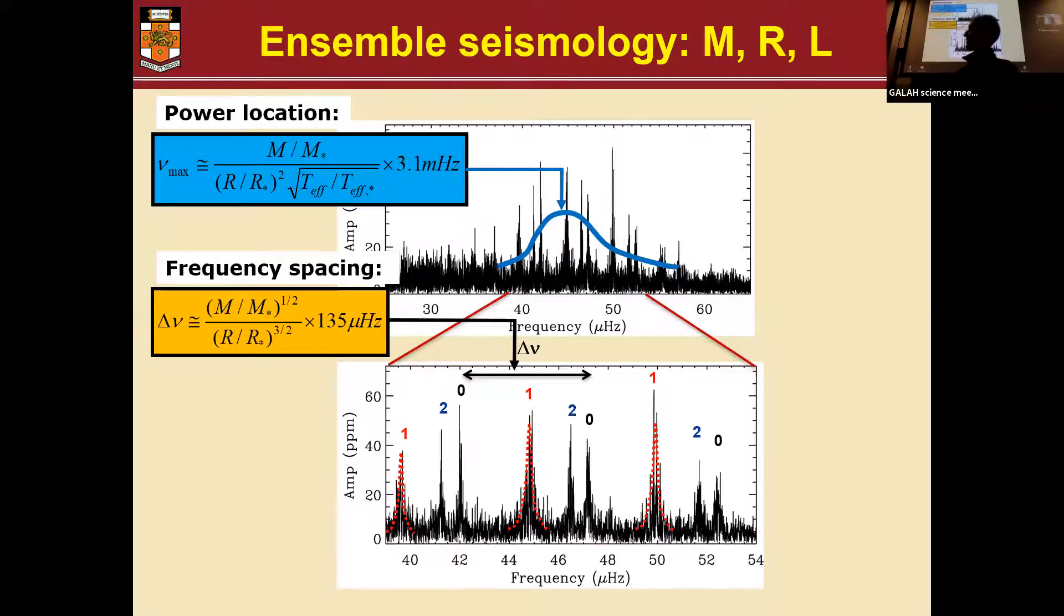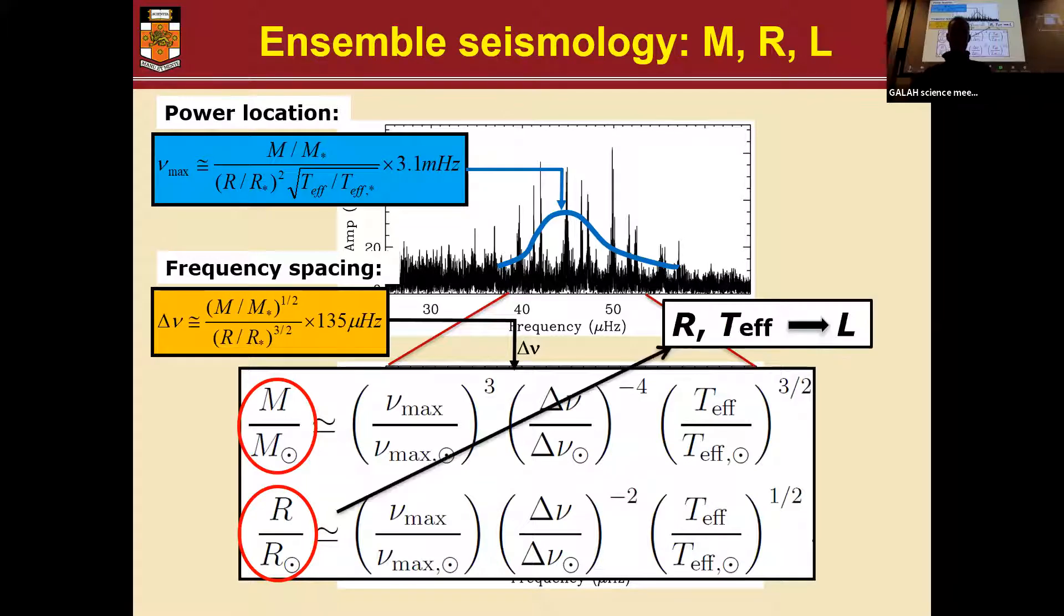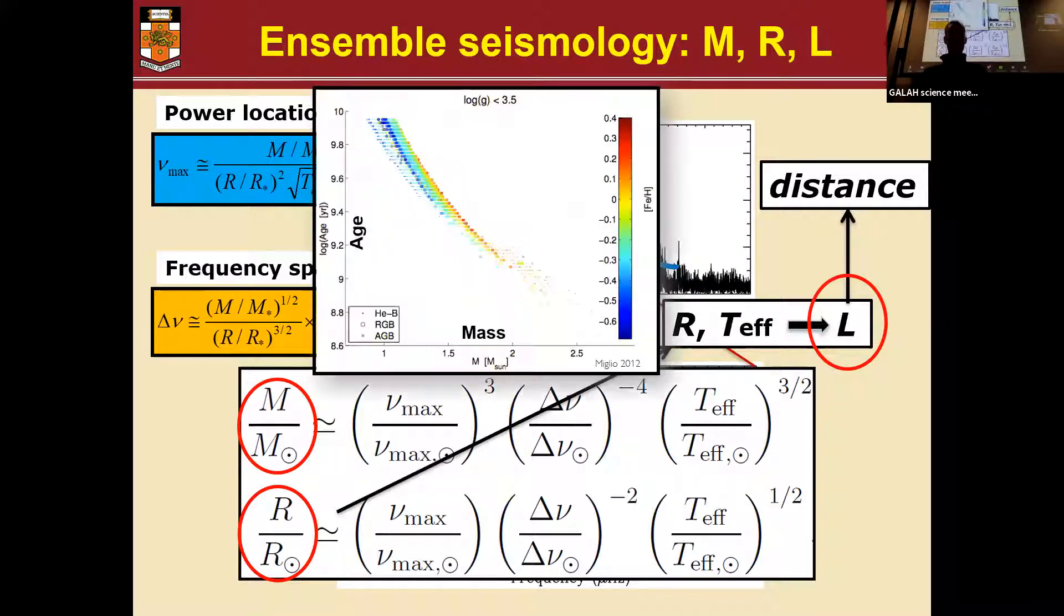And those two parameters depend on fundamental measurements we can make on the star, like mass, radius, and temperature. We can therefore combine those two relations to get mass and radius just from those two. Obviously, you need a temperature input as well. And you can get for free, therefore, luminosity and a distance. And because we are talking about giants, when we also have a metallicity, we can get a pretty good handle on the age.